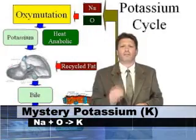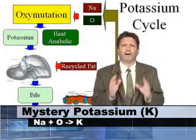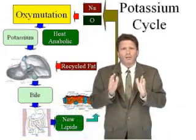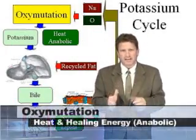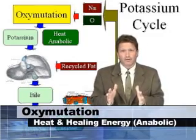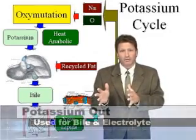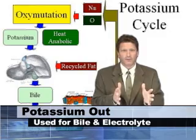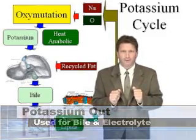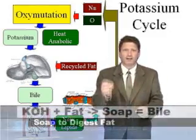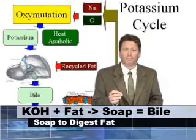Oxymutation creates cellular potassium by quantum fusion of sodium and oxygen. The reaction releases heat and anabolic healing energy. Later, cells pump out the potassium as waste. The potassium travels to the liver, mostly in lymph. The liver mixes potassium hydroxide with recycled fat into soap, known as bile.